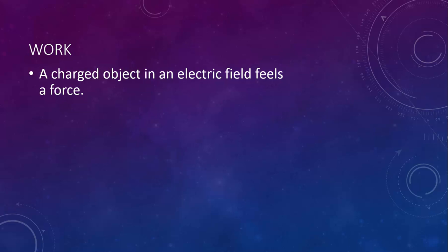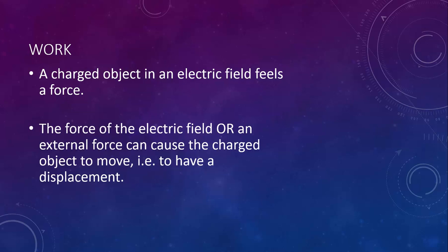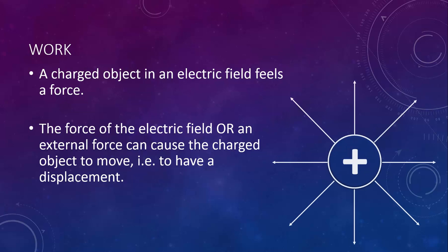There's one more thing we need to talk about related to electric fields. A charged object in an electric field feels a force. Either the force of the electric field or an external force can cause the charged object to move, and if it's moving, that means it has a displacement. For example, here we have a positive charge and you can see the electric field around it. If we put another positive charge at point A, the electric field itself would exert a force in that direction. If the particle at point A was free to move, it could have a displacement and end up at point B. In either case, we have the object feeling a force and having a displacement — this means that work is done.